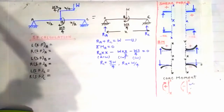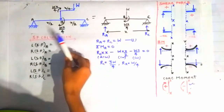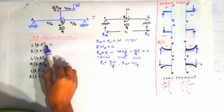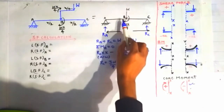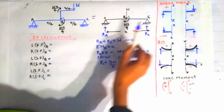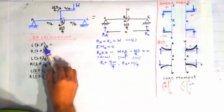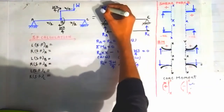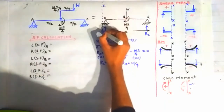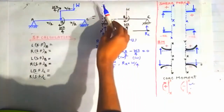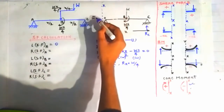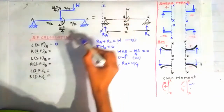Now we will draw the shear force diagram. We need to calculate the shear force at points A, B, and C — on both the left side and the right side of each point. First, we calculate shear force on the left side of point A by drawing a section there. Looking on the left side of this section, the shear force is zero because there is no force contributing to shear force at section XX.